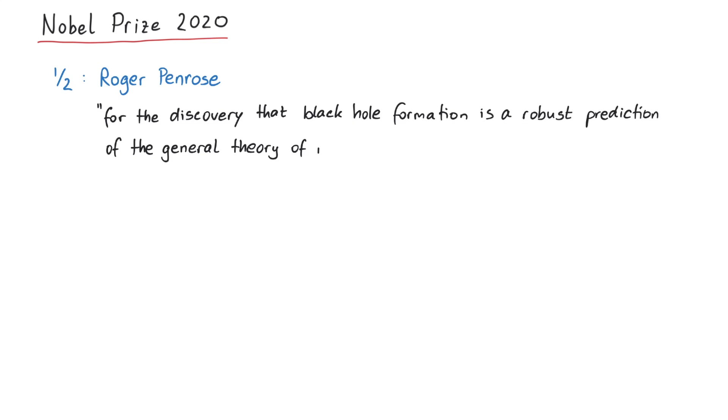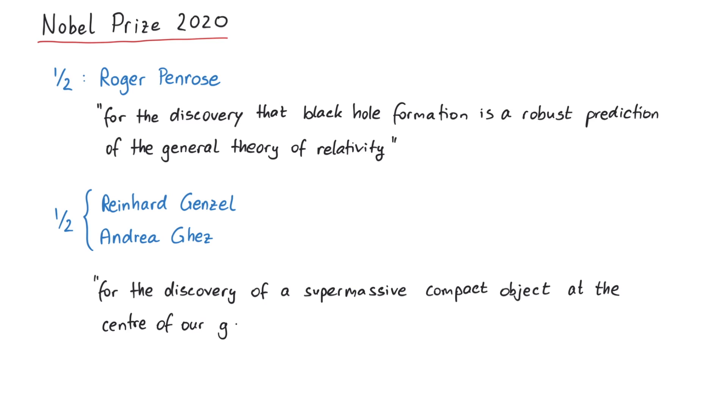On October 6th, 2020, the Royal Swedish Academy of Sciences announced this year's Nobel Prize in Physics, with one half to Roger Penrose for the discovery that black hole formation is a robust prediction of the general theory of relativity, and the other half jointly to Reinhard Genzel and Andrea Ghez for the discovery of a supermassive compact object at the center of our galaxy.